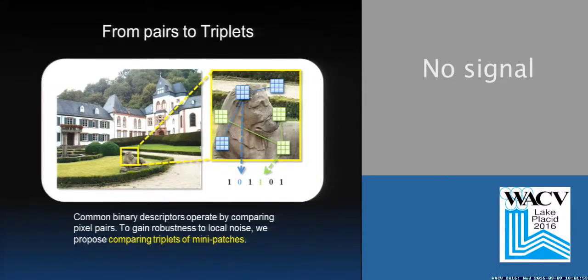First, I'll present the motivation to our problem. Usually, common binary descriptors operate by comparing pairs of pixels. We instead suggest to compare triplets of pixel patches. Later, we'll see how we do that.